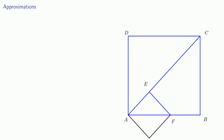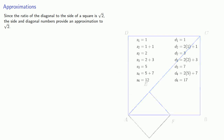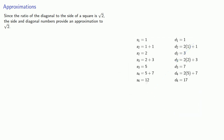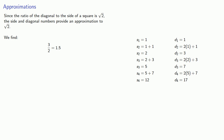Since the ratio of the diagonal to the side of a square is √2, the side and diagonal numbers provide approximations for √2. The second pair, 3 and 2, gives the approximation 3/2, or about 1.5. The next pair, 7 and 5, gives 7/5, or 1.4. The next pair, 17 and 12, gives 17/12.